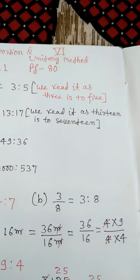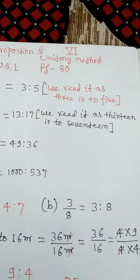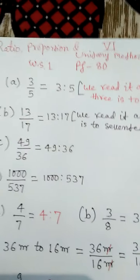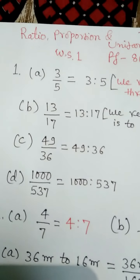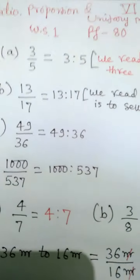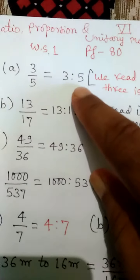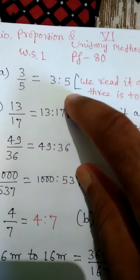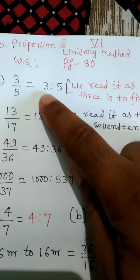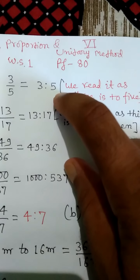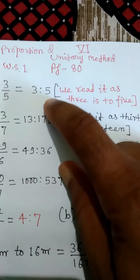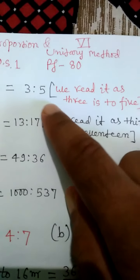Ratio is the comparison of two quantities in the same unit. We can change a fraction into a Ratio. For example, 3 by 5, which is in fraction form, when written as 3 is to 5, is called a Ratio. Here, 3 is the first term called Antecedent, and 5 is the second term called Consequent. It is read as 3 is to 5.